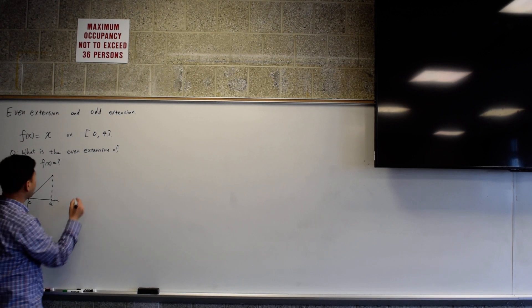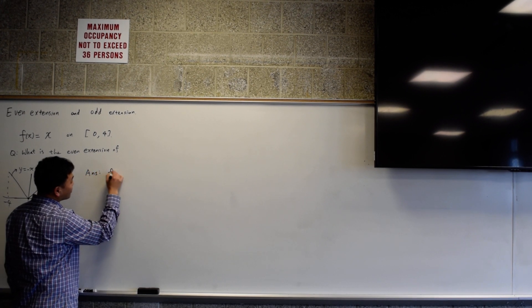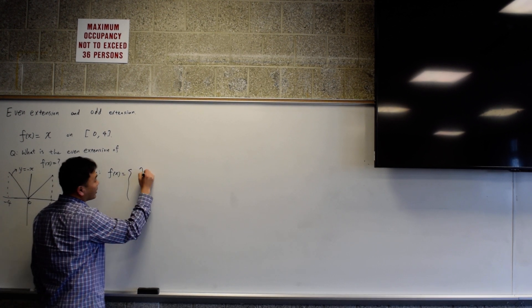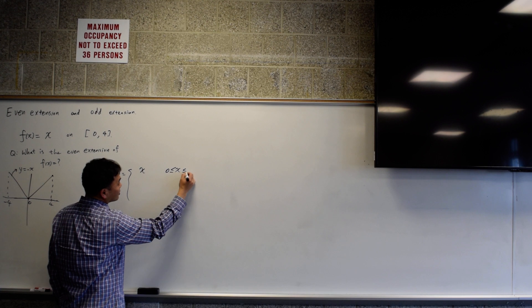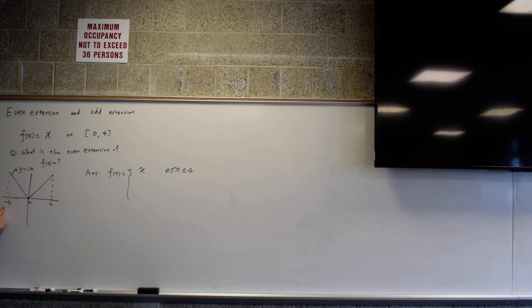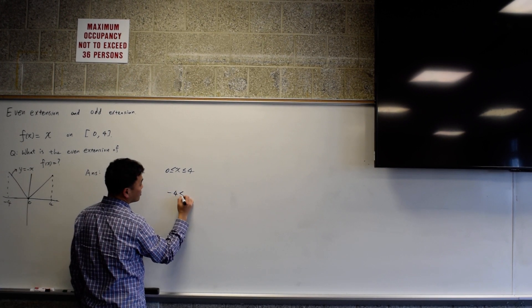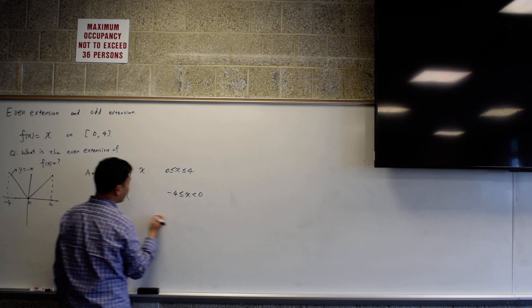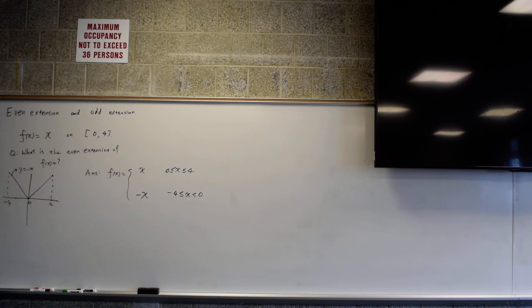So if you were to write out what f of x is, it's like this. f of x is x if x is between 0 to 4 because that's what it was before. But if you were to ask what's going to happen from negative 4 to 0, then there you should have the graph as negative of x. So that's how you write the answer. In other words, formulas will be like this.